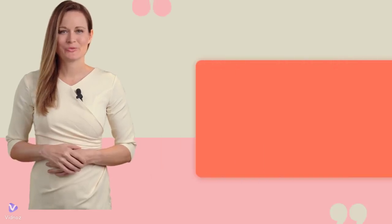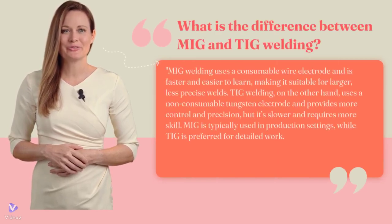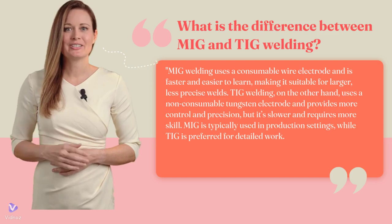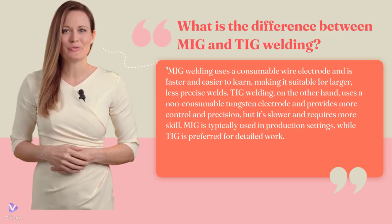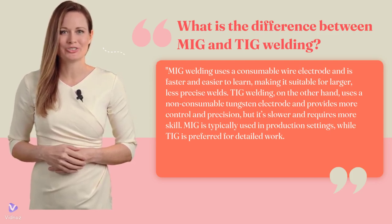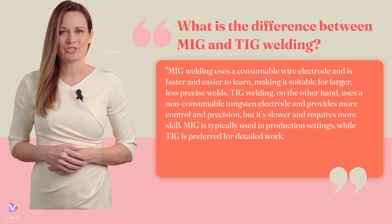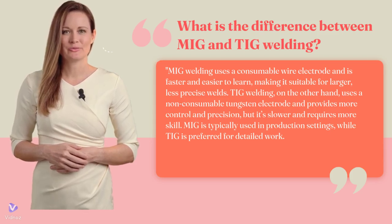What is the difference between MIG and TIG welding? MIG welding uses a consumable wire electrode and is faster and easier to learn, making it suitable for larger, less precise welds. TIG welding uses a non-consumable tungsten electrode and provides more control and precision, but it's slower and requires more skill.